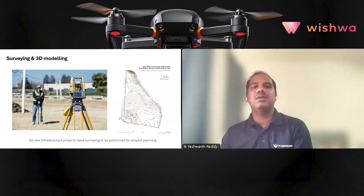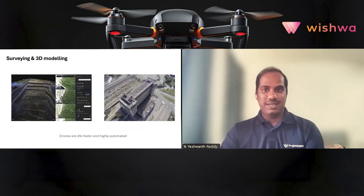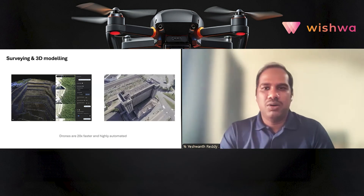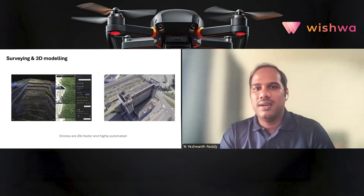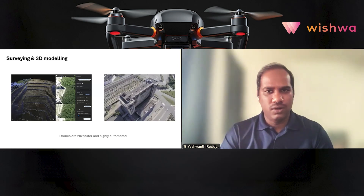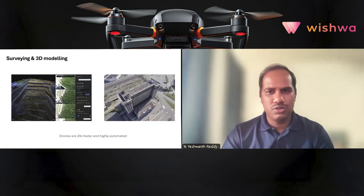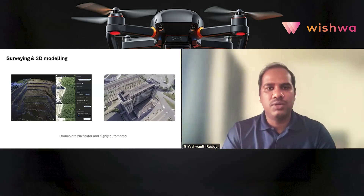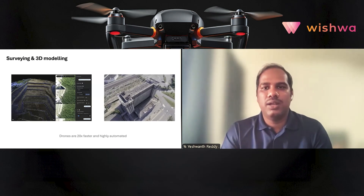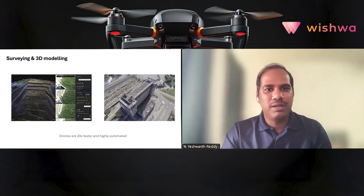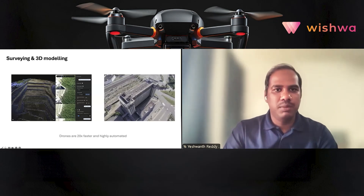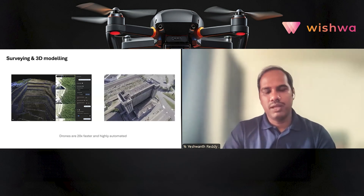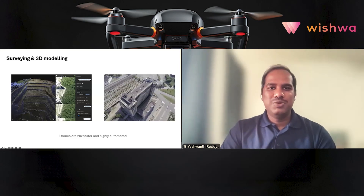Traditionally this was a slow, manual process, but drones have really changed the game. Drones can survey a 100 kilometer stretch in about three to four days instead of three months, with very high precision. They're now being used for all sorts of infrastructure projects — roads, buildings — doing the job that ground-based traditional equipment used to do. Even laypeople can now understand the data, because instead of a contour map, a 3D model is generated.